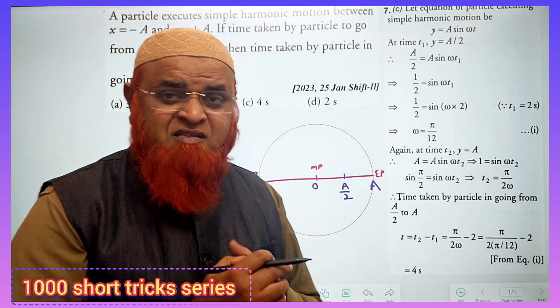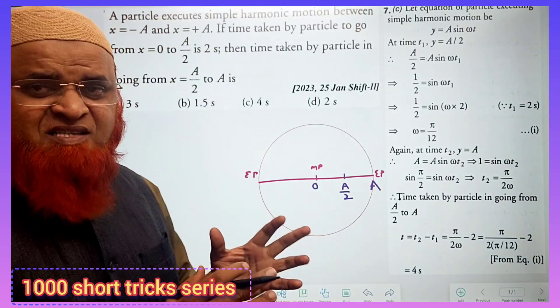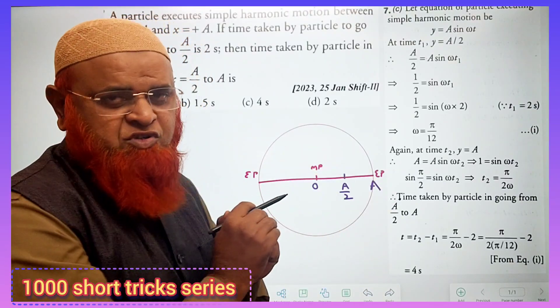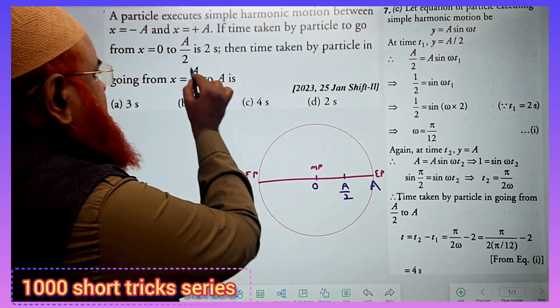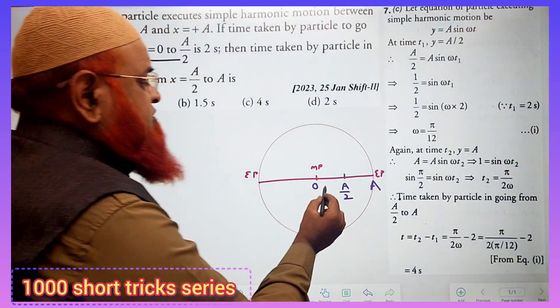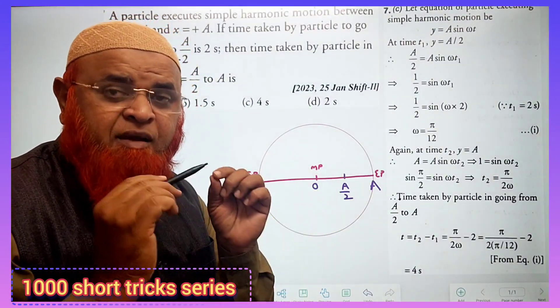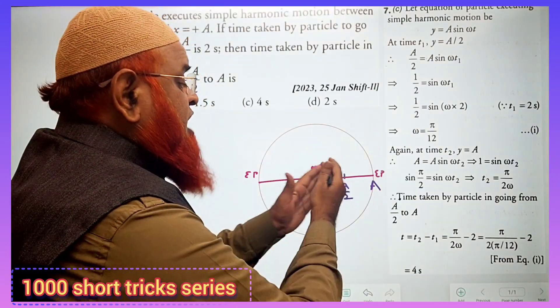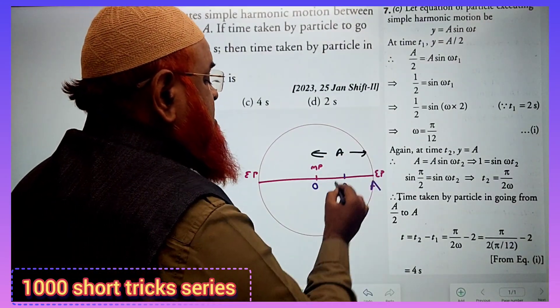What is this question actually? Try to understand the question. The question says that in a simple harmonic motion, this is the mean position, this is an extreme position. It is given in the problem that the time taken by a body to travel from the mean position to half of the amplitude - you all know this is going to be an amplitude.